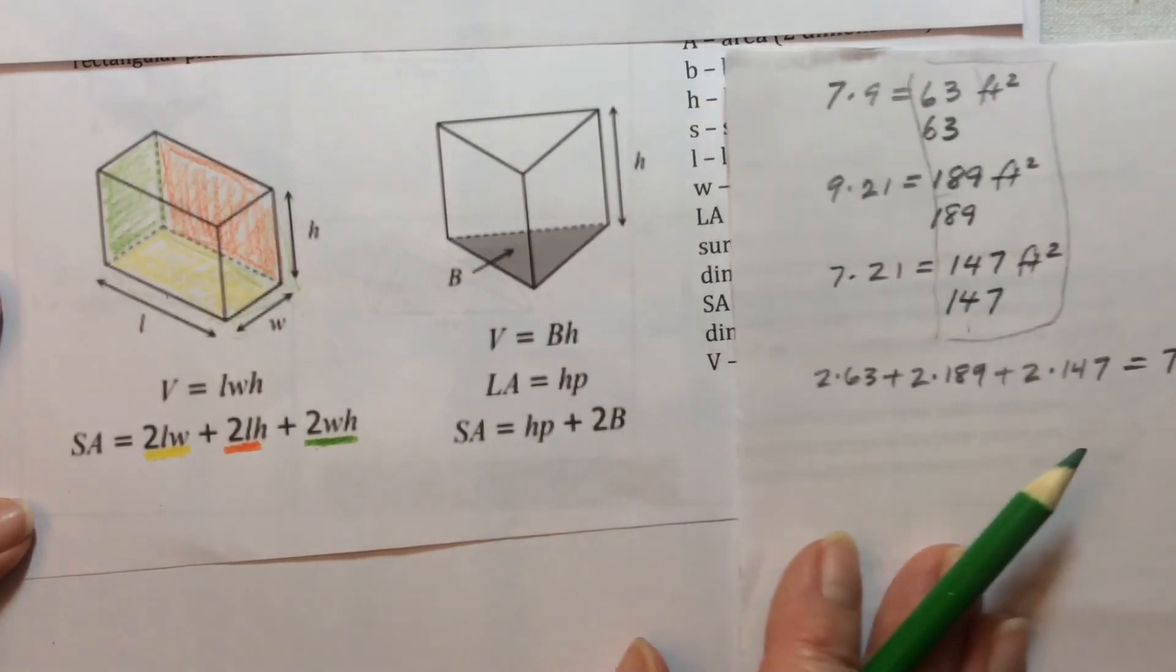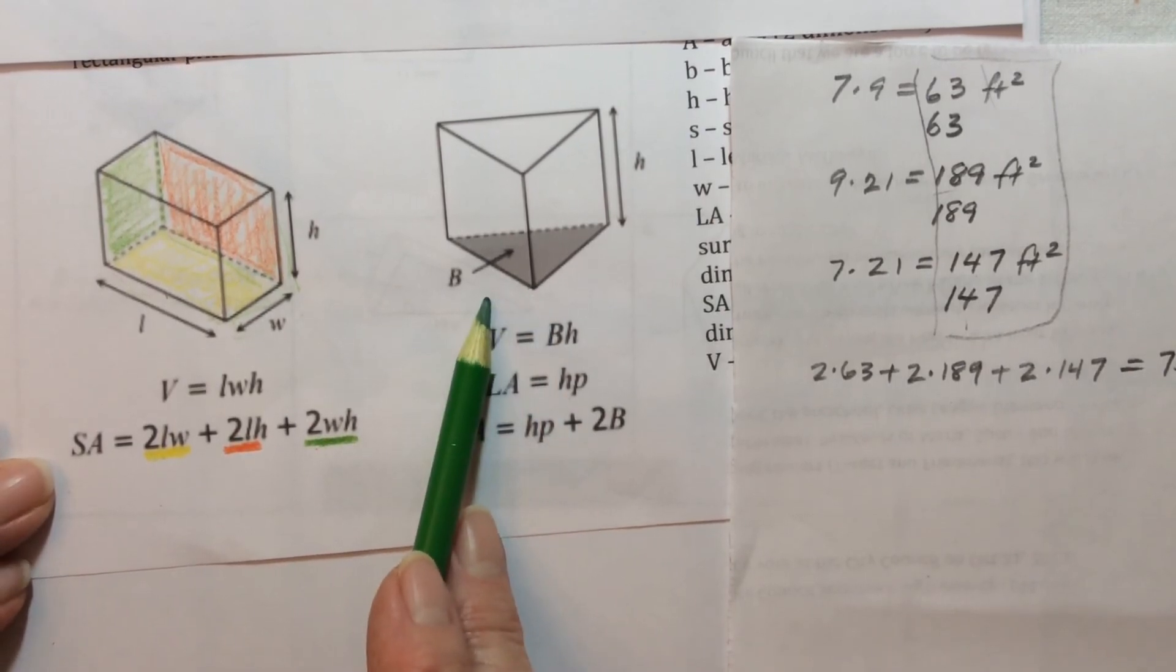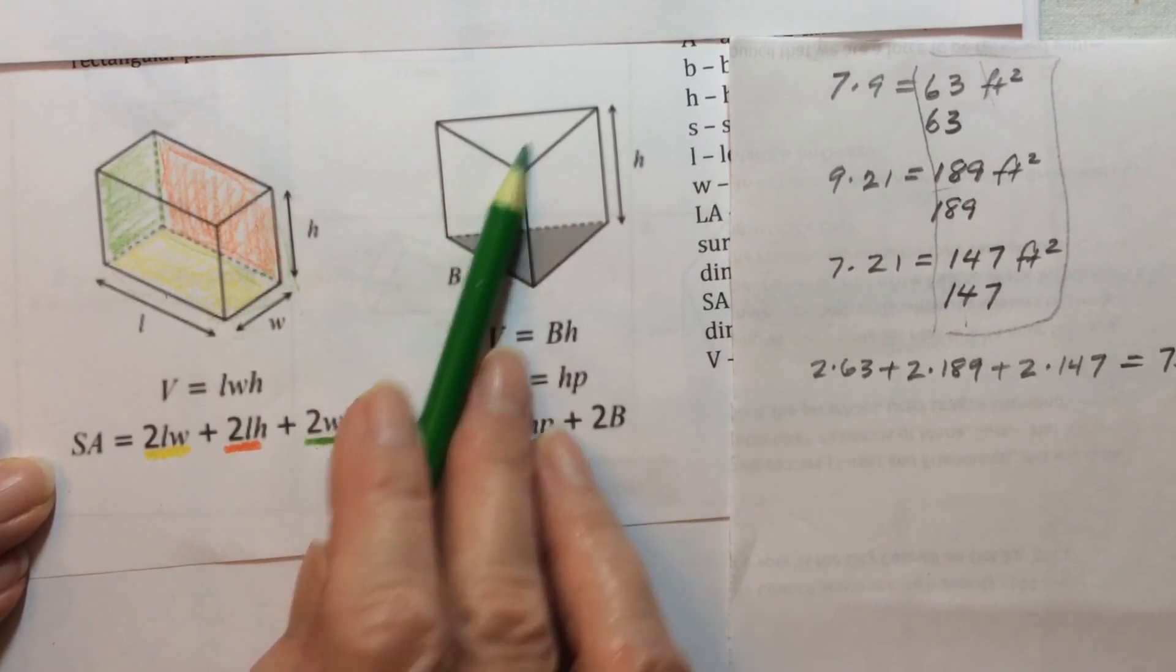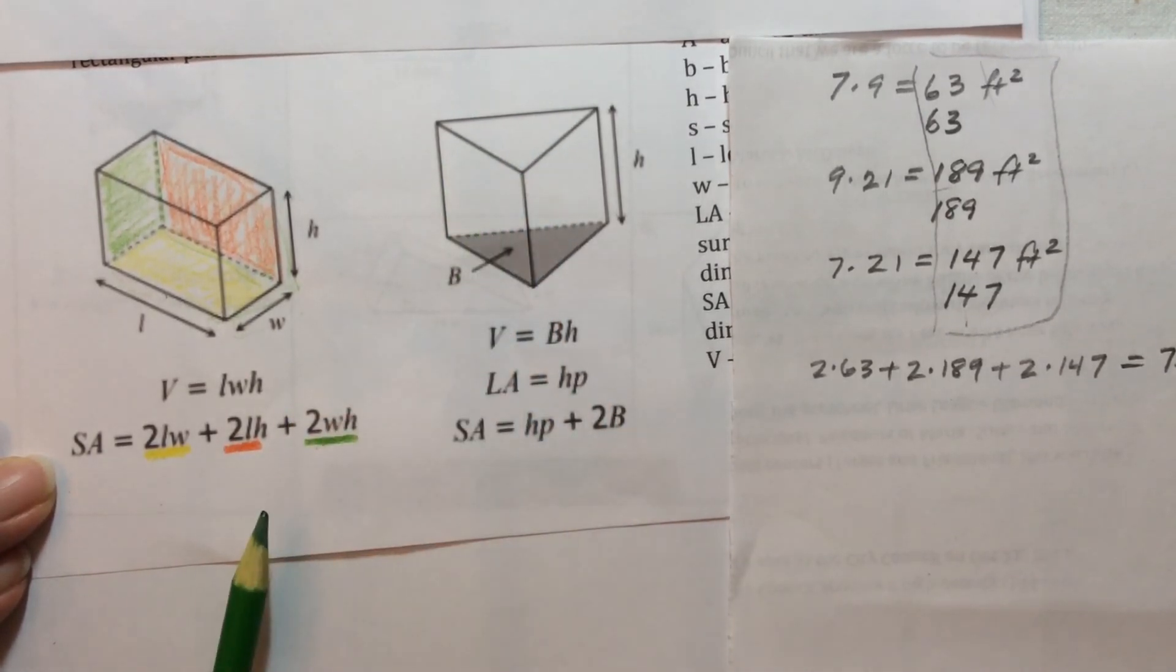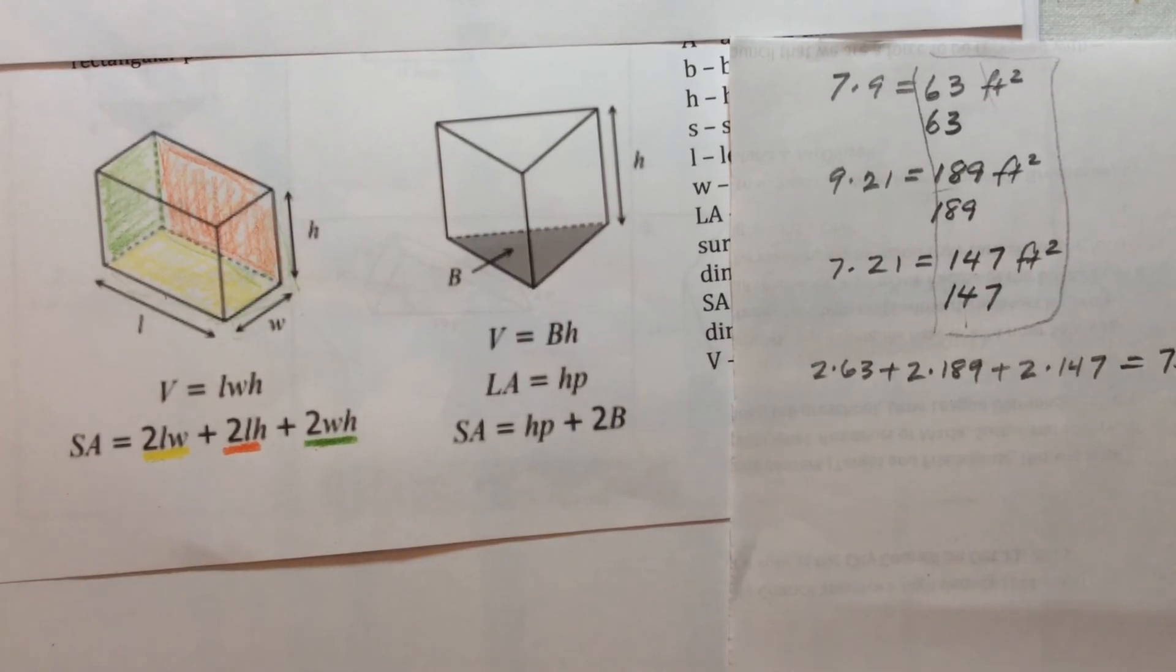So now we're going to do something similar, only now we're looking at something called a prism. So two of the faces on a prism are going to be triangular. So let's look at that in a little more depth now.